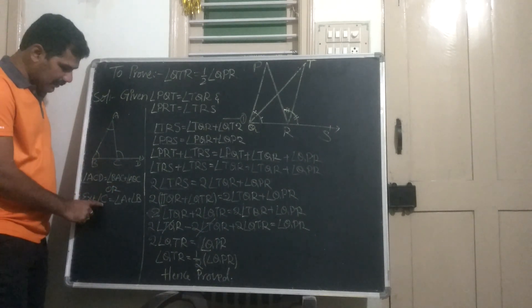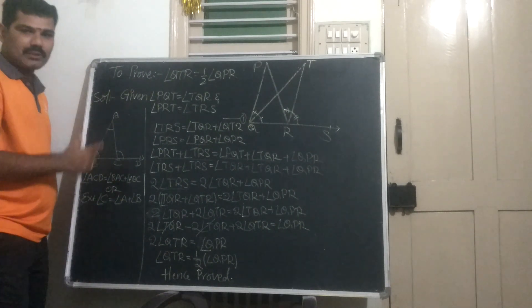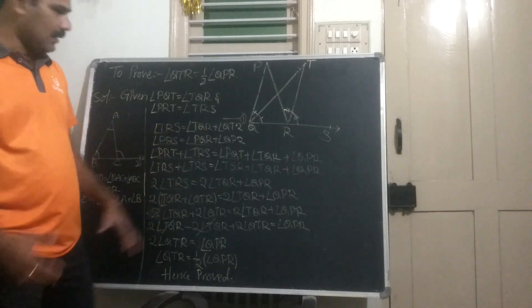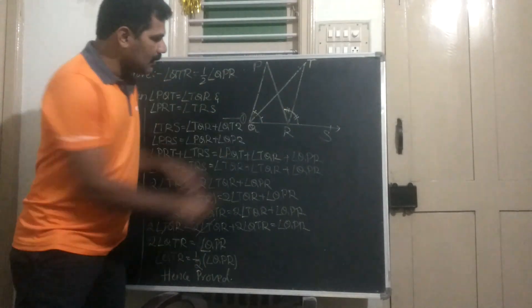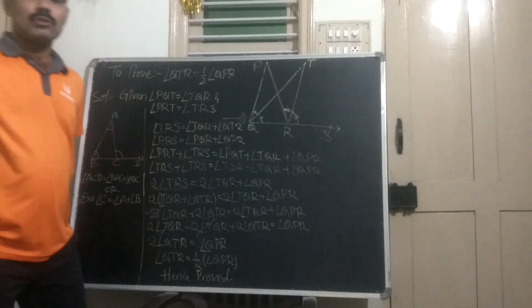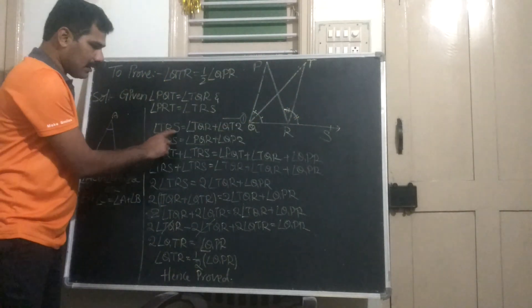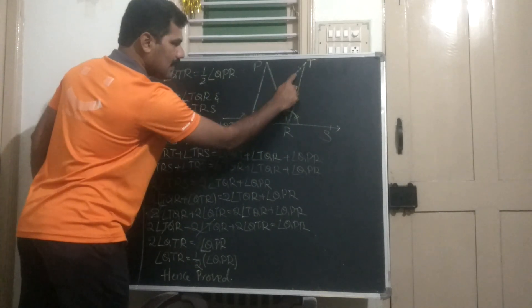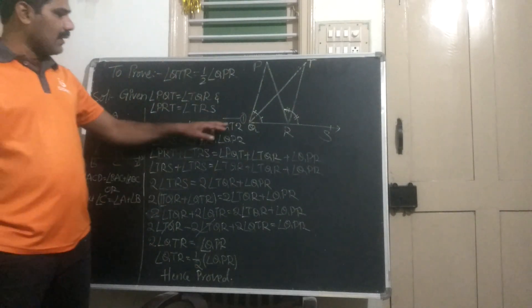So external angle C equals angle A plus angle B. If you are aware of this, we can solve this problem easily. Now, the external angle for triangle QTR is angle TRS. So we can write: angle TRS equals angle TQR plus angle QTR. Let us call this equation one.